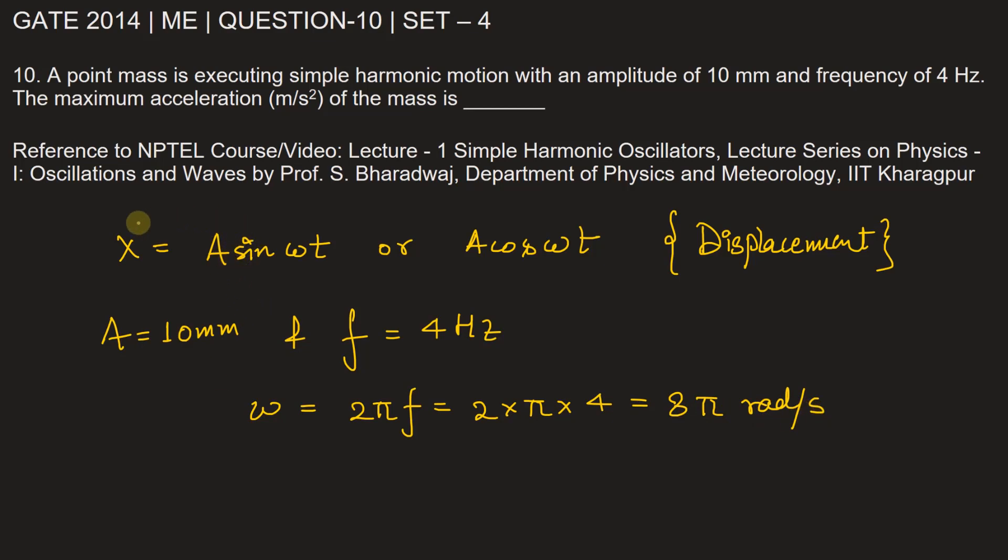We have considered x, the displacement, equals A cos omega t. So v, the velocity, will be equal to dx upon dt. This will be negative A omega sine omega t.